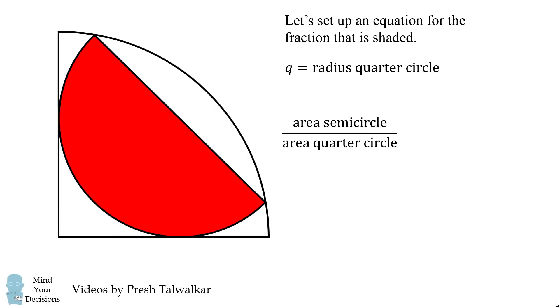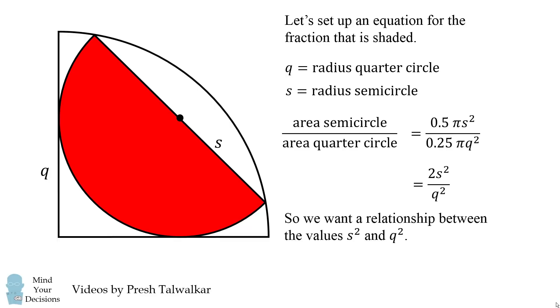Let q equal the radius of the quarter circle, and let s equal the radius of the semicircle. The area of the semicircle is 0.5πs², and the area of the quarter circle is 0.25πq². We can cancel out the π's, and 0.5 divided by 0.25 equals 2. So this simplifies to 2s²/q². So we want a relationship between s² and q².